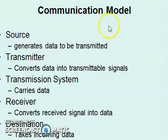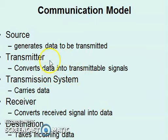First we will briefly look at the communication model. It requires five major things: a source that generates data to be transmitted, a transmitter which converts data into a transmittable signal, a transmission system which carries the data, a receiver that converts received signals into data, and the destination that takes the incoming data.